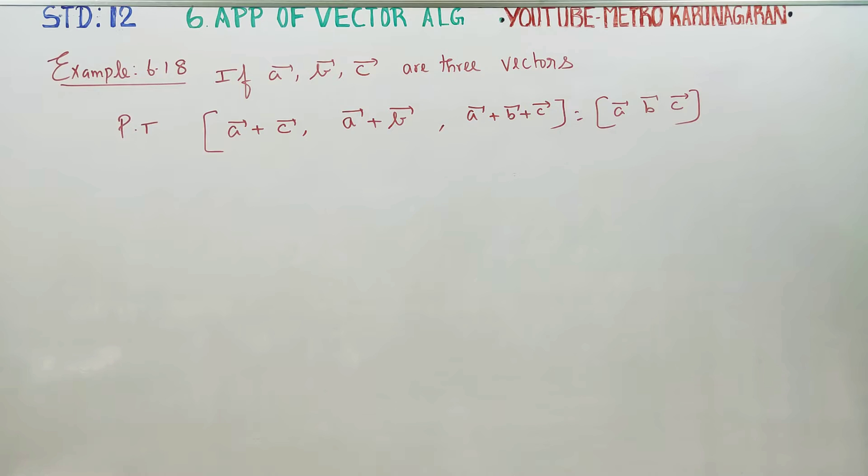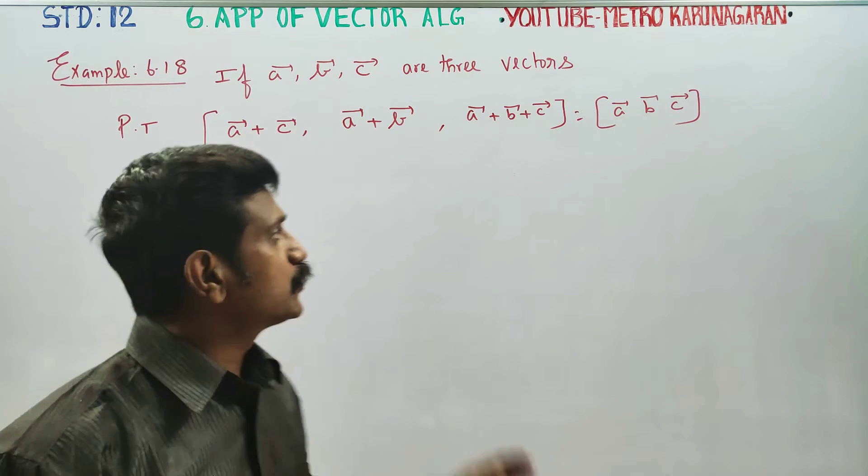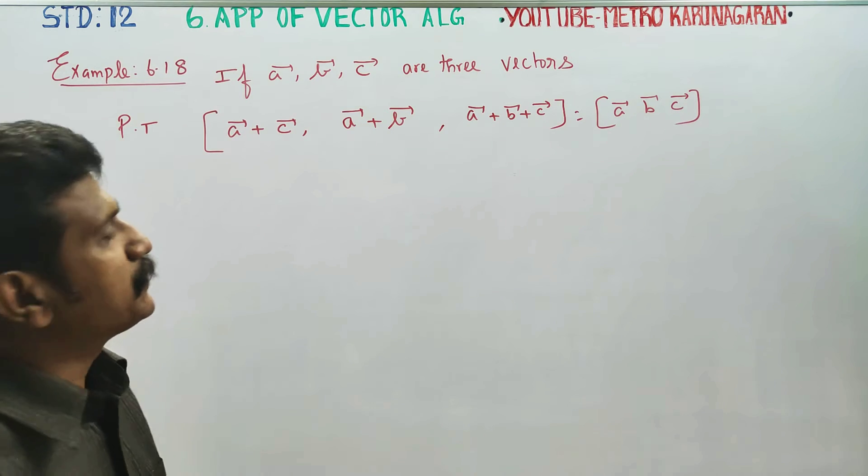In example 6.18, if A, B, C are 3 vectors, you have to prove that the scalar triple product of this is ABC.